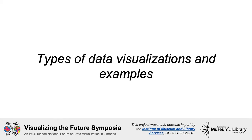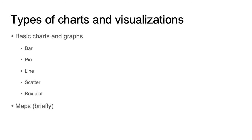This section will cover different types of data visualizations and provide some examples of the most common types. The next few slides will review bar, pie, line, scatter, and boxplots. While this presentation will touch on mapping, there are entire fields, including cartography and GIS, devoted to these topics.